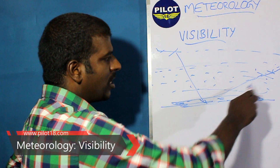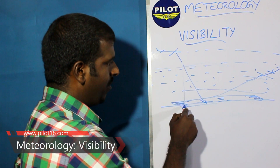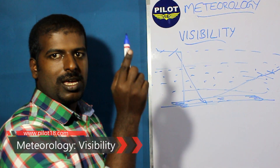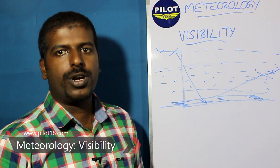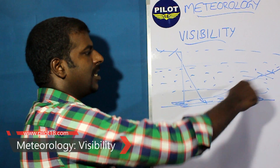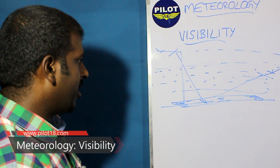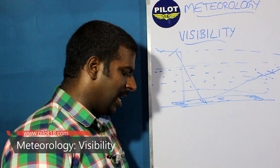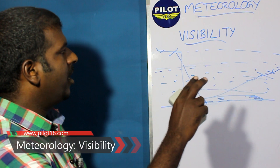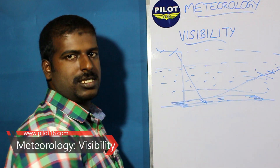This reduced visibility on approach is called slant visibility, while looking straight down is vertical visibility. Even if the vertical visibility is good, it does not mean that the slant visibility will also be good. This situation occurs when there is a layer of haze or fog.